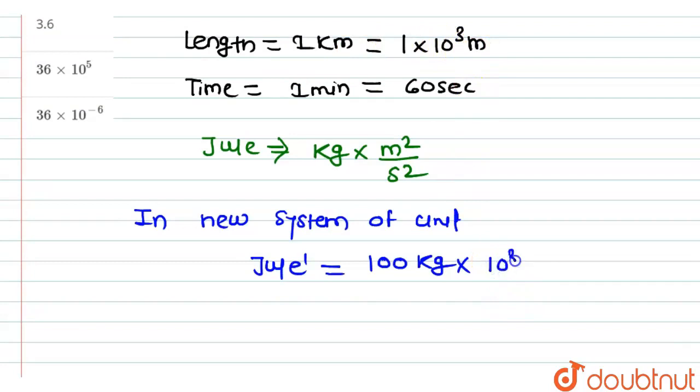divided by, the unit of time is 1 minute that is 60 seconds, so 60 square, here the unit of time will be replaced by 60 second bracket square.